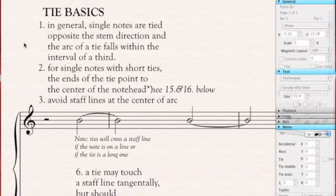In general, single notes are tied opposite the stem direction, and the arc of a tie falls within the interval of a third, and I've shown that right here. You'll see that the arc of the tie points to the center of the note and arcs from the C space through the E space, and that's what I mean by the interval of a third.